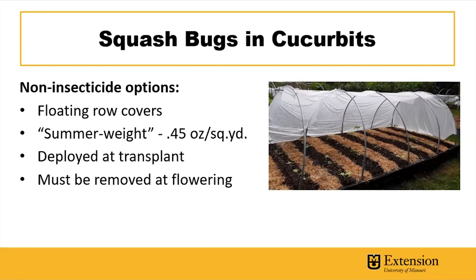A really great non-insecticidal option is floating row covers. This shows row covers placed over bent electrical metal conduit hoops — you can also lay them directly on the plants, as squash plants are capable of supporting this fabric. For insect control, it's best to go with a lighter summer-weight fabric, which allows 90% light transmission. Heavier fabrics will reduce light transmission and may cause heat accumulation underneath, which isn't good in summer but may help in fall for season extension. It's important to have this on hand when you transplant the crops.